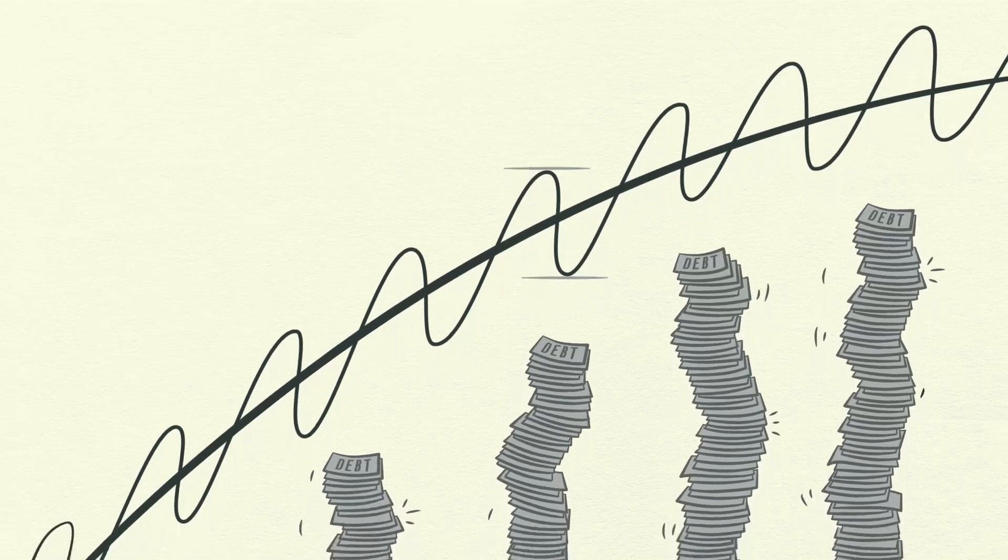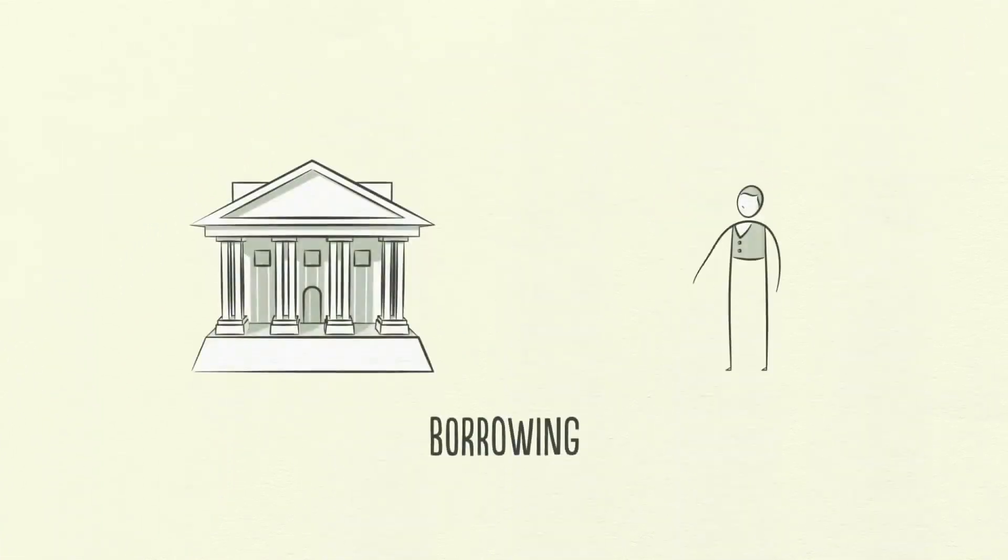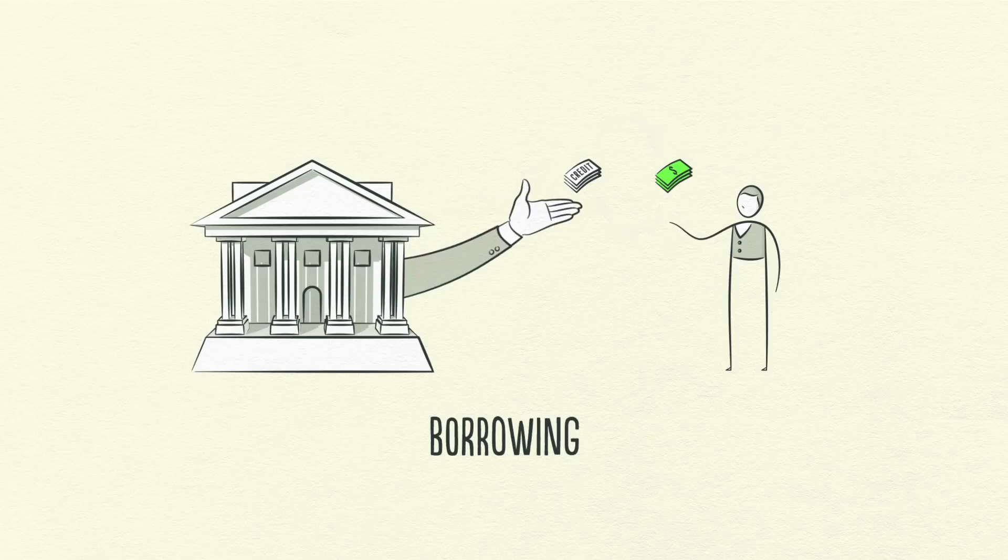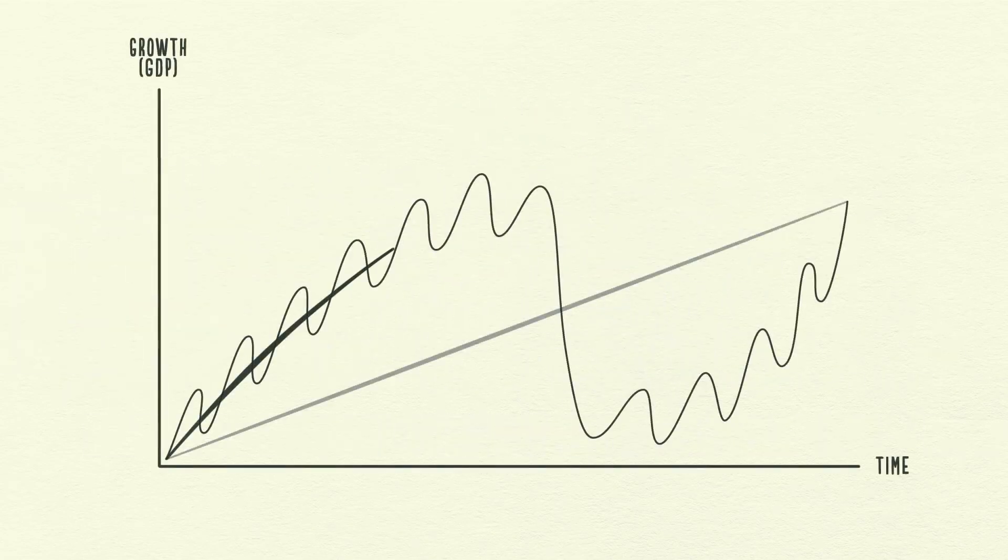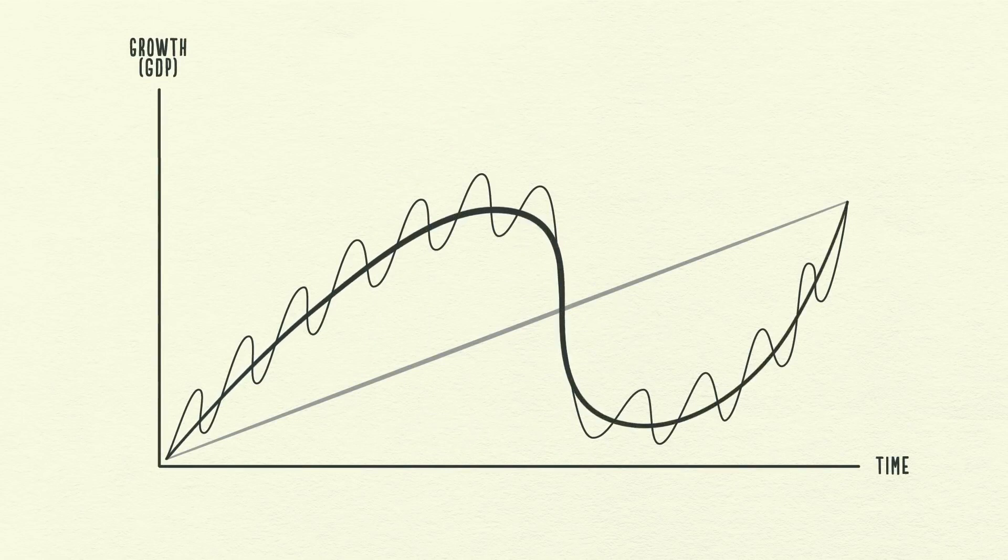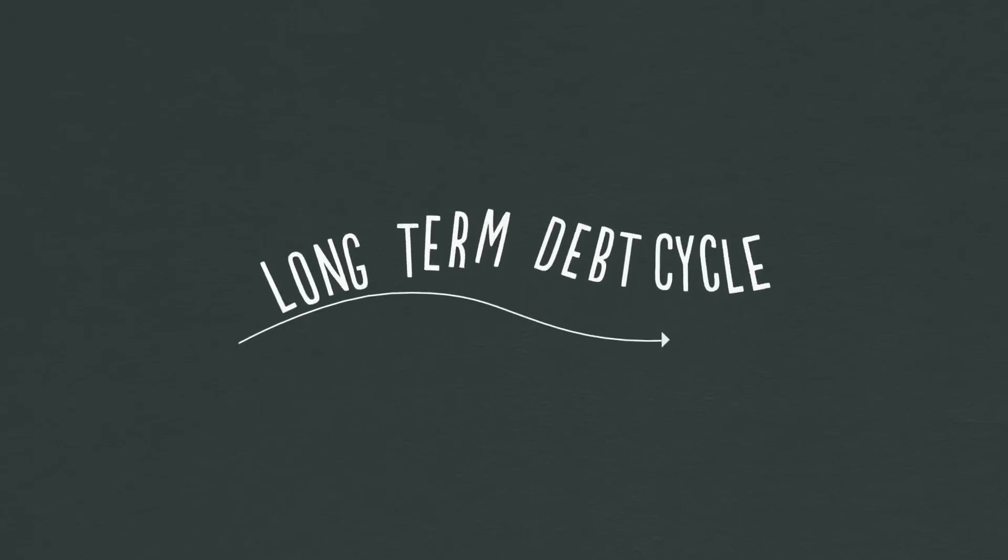Why? Because people push it. They have an inclination to borrow and spend more instead of paying back debt. It's human nature. Because of this, over long periods of time, debts rise faster than incomes, creating the long-term debt cycle.